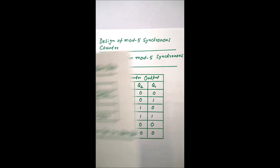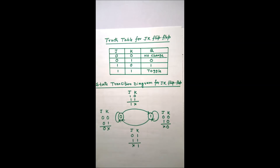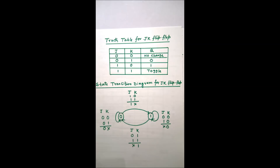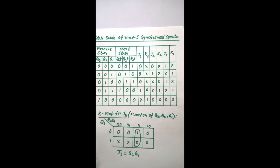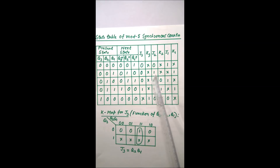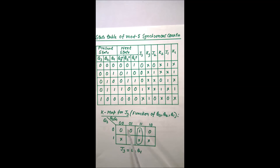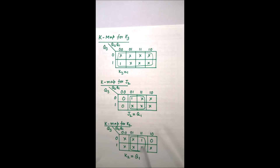To design the mod-5 synchronous counter using JK flip-flops, we need the truth table and state transition diagram. From the state transition diagram we create the state table, and from that we find the relationship of J3 in terms of outputs Q2, Q1, and Q3. Using a K-map, we found J3 = Q2·Q1, K3 = 1, J2 = Q1.